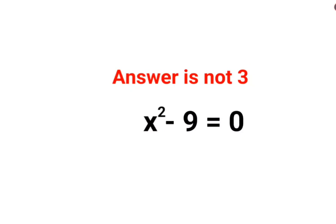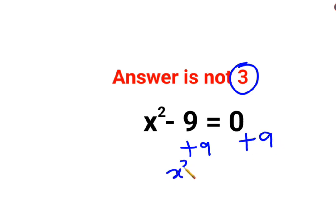Welcome everyone. Today we are going to understand why the answer for this question is not supposed to be just 3. We have x squared minus 9 equals 0. Put the 9 on the other side by adding 9 on both sides. So you have x squared minus 9 plus 9, which gives you x squared on the LHS and 0 plus 9, which is 9.